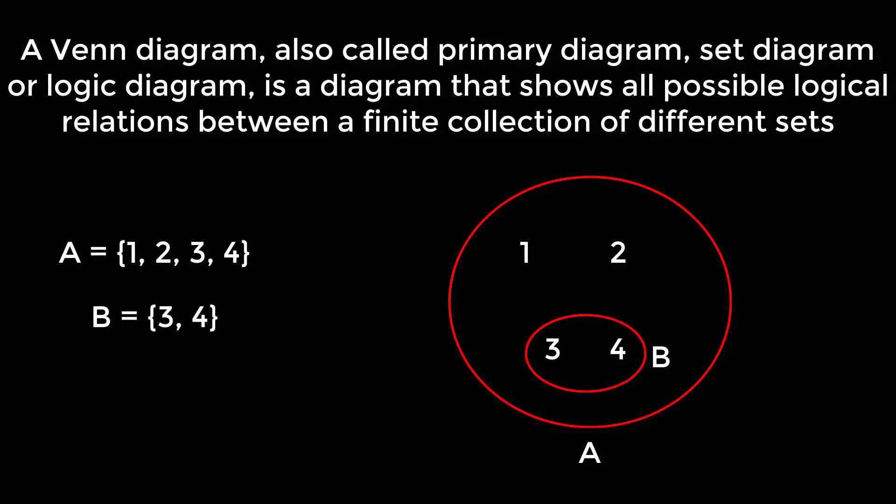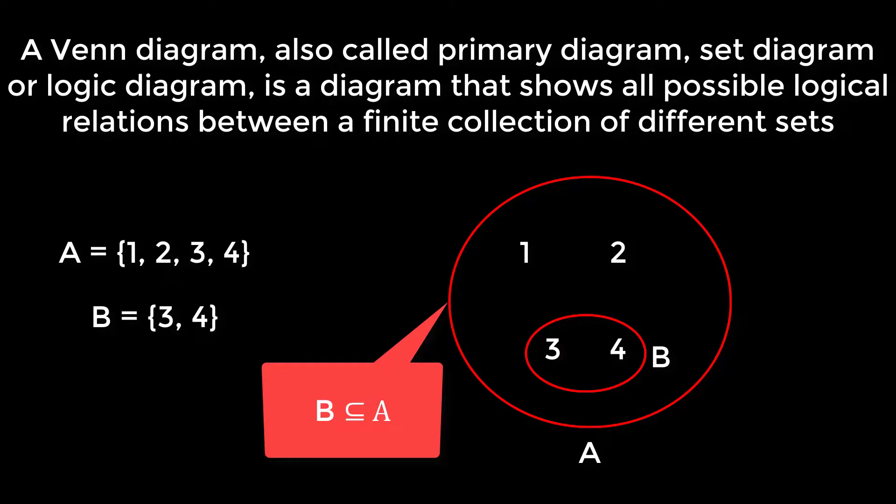Now this Venn diagram is showing the relation between set A and B, that is B is a subset of A. We will learn more about Venn diagrams in upcoming lessons. For this lesson that's all, see you in the next lesson.